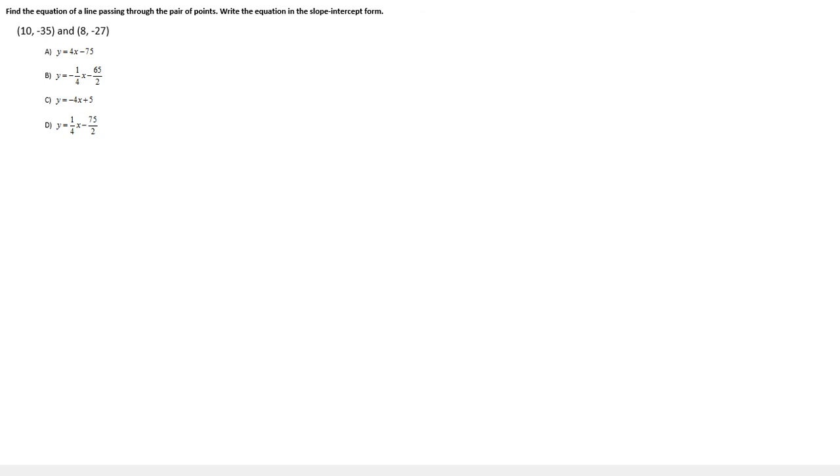The first thing we need to think about is what kind of information are we being given. We're given two points. Points and ordered pairs are referred to interchangeably, but they're the same thing. What we're thinking about is what we're trying to accomplish here. We're being asked to find the equation of a line that passes through these two points.